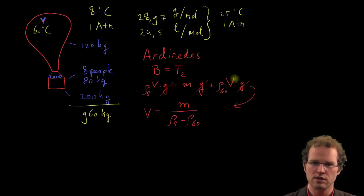I hope you see how I changed this one into that one. G has disappeared, this one went to the left, and I took V outside of the brackets, and then divided by ρ₈ minus ρ₆₀, so we are left with this one.